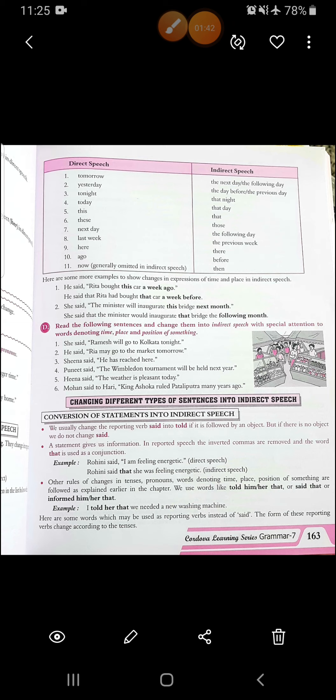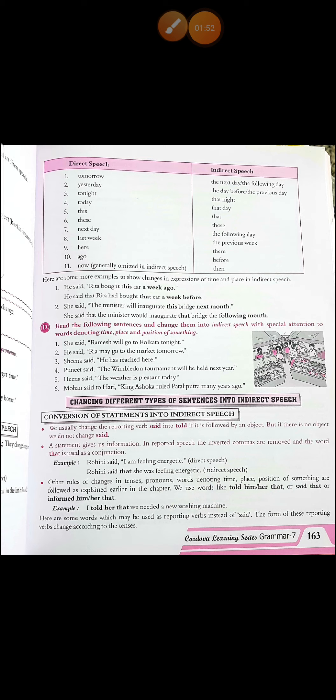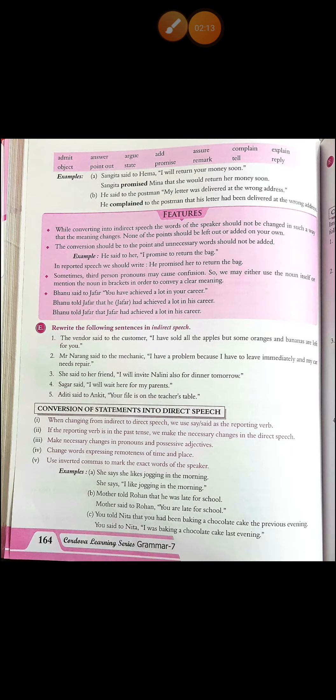Then other rules of change in tense, pronoun, words denoting time, place, and position are followed as studied earlier in the chapter. We use words like 'told him/her that', or 'said that', or 'informed him/her that'. Example: I told her that we needed a new washing machine. Here are some words which may be used as reporting verbs instead of 'said', and their form changes according to the tenses.